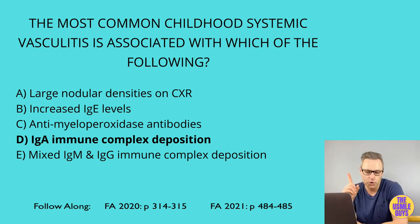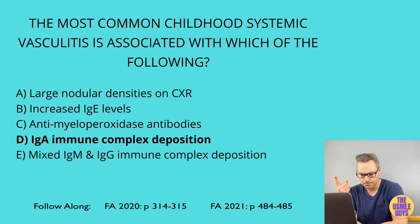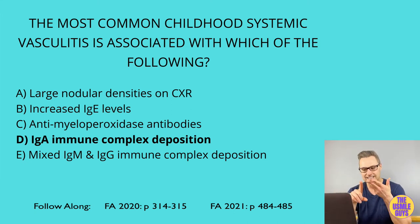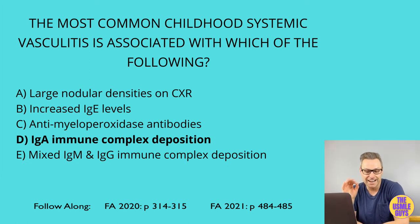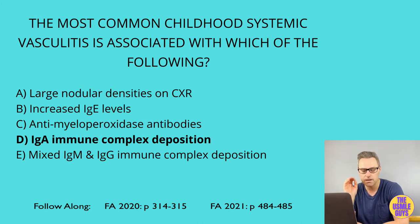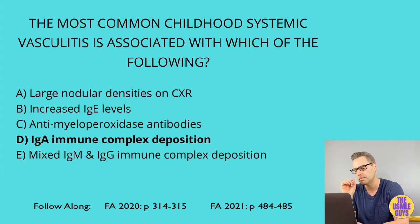Option B — increased IgE levels — is associated with eosinophilic granulomatosis with polyangiitis, also known as Churg-Strauss. This is characterized by asthma, sinusitis, purpura, and peripheral neuropathy; it can also involve the GI tract, kidneys, and heart. Microscopy shows granulomatous necrotizing vasculitis with eosinophilia. In addition to increased IgE, we see MPO-ANCA and P-ANCA. Microscopic polyangiitis is a necrotizing vasculitis involving the kidneys, lung, and skin with pauci-immune glomerulonephritis and palpable purpura. The key diagnostic features are the lack of granulomas and lack of nasopharyngeal involvement, with anti-myeloperoxidase antibodies present.